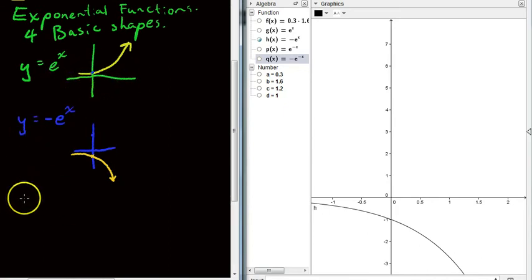Now the third basic shape, which we'll go through here, is y equals e to the negative x. Let's have a look at what that looks like.